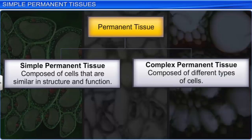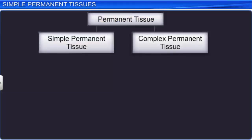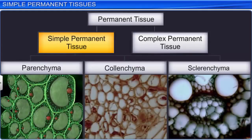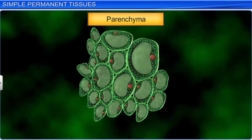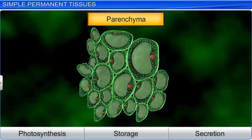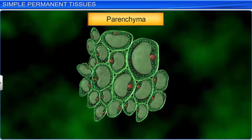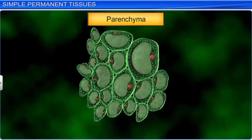There are three types of simple permanent tissues: parenchyma, colenchyma, and sclerenchyma. Parenchyma is the most common ground tissue. It performs functions such as photosynthesis, storage, and secretion. The cells of the parenchyma have the same dimensions — same length, width, and height — which means they are isodiametric. Parenchyma cells are of different shapes such as sphere, oval, round, polygonal, or elongated.